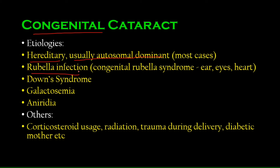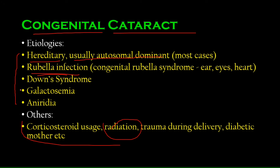Another very high-yield cause is rubella infection — if you are in an exam and forget rubella, that will not be accepted. Down syndrome (trisomy 21, having three copies of chromosome 21) is also a significant cause of congenital cataracts.